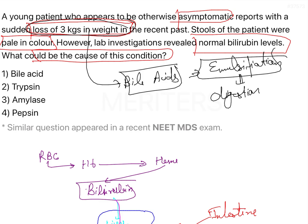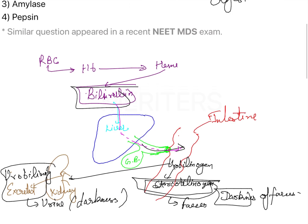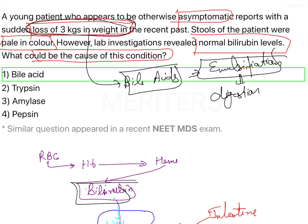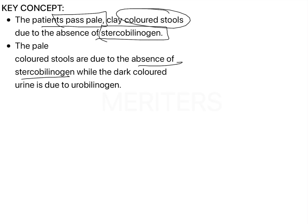There must be an assumption that emulsification of fat was impaired, and that could have led to the loss of 3 kg in this patient. Secondly, bilirubin was not excreted much to the intestine, and that's why less stercobilinogen was formed, causing pale stools. The answer points to bile acids. The key concept: pale clay-colored stools are due to the absence of stercobilinogen, while dark-colored urine is due to urobilinogen.